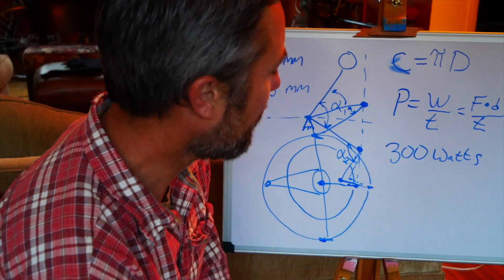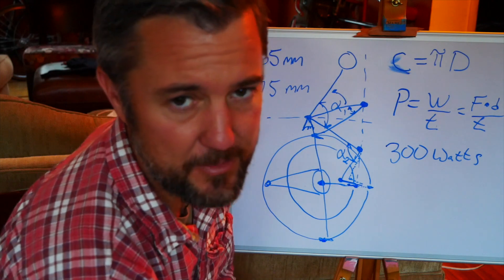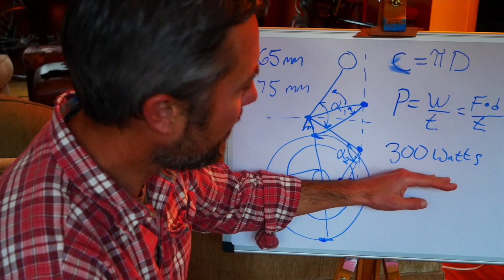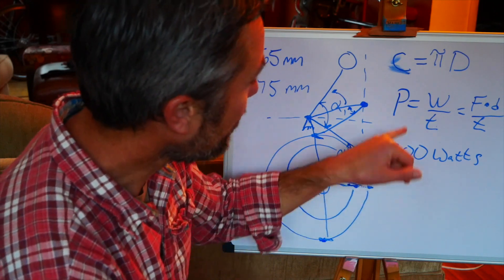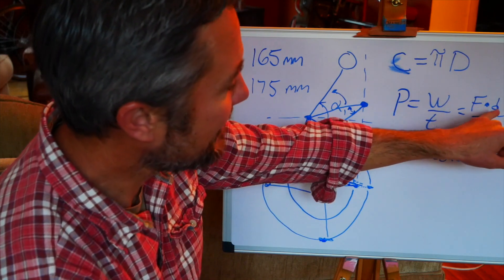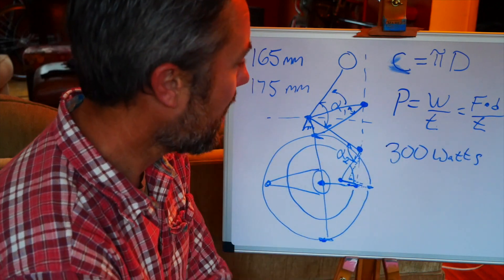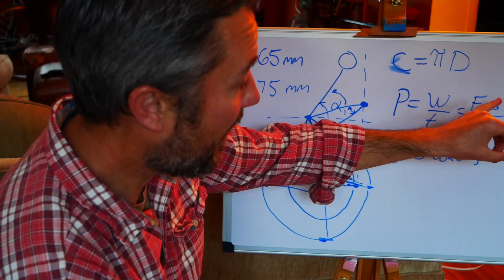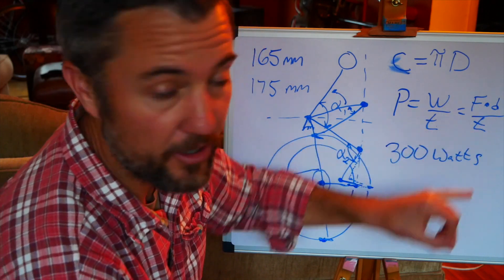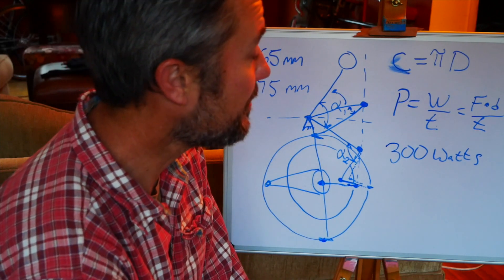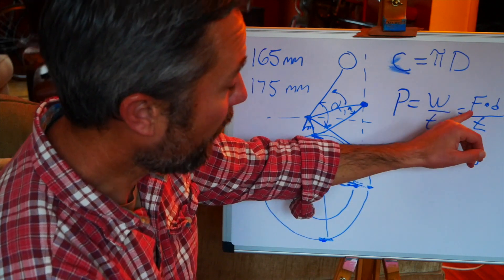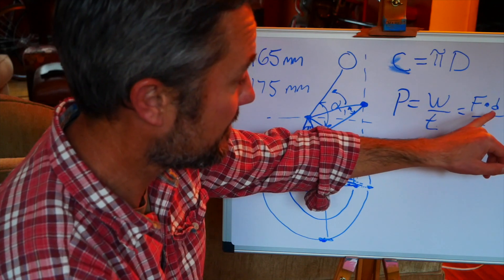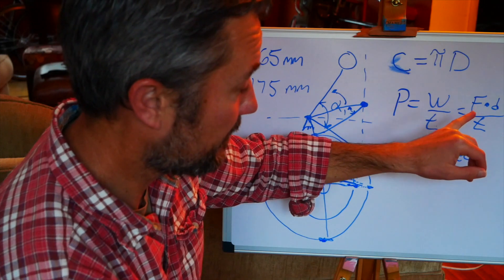I mean, it doesn't matter. It could be 20 minutes, it could be 5 minutes. The idea here is that I can produce this wattage in a number of ways. I can produce it with lower force, longer distance, with the same cadence. Or, I can produce it with a higher force, a higher crank, but a longer period of time. I can produce it with a lower force, or with the same force, and a shorter distance, but in a lower period of time.